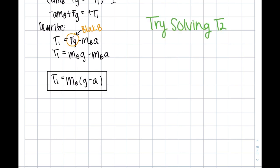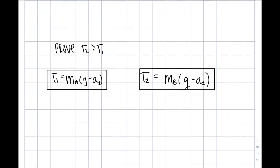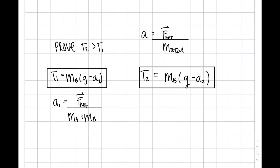So now try solving for T2. You should get something pretty similar to T1. The only difference is our acceleration. So remember, we're trying to prove T2 is greater than T1 and we can't make that conclusion quite yet. We need to solve for these accelerations. So using Newton's second law, acceleration equals the net force over the total mass. So acceleration 1, so acceleration for this scenario, is going to include mass A and therefore acceleration 2 is going to include the mass of the pulley, which is no longer negligible.